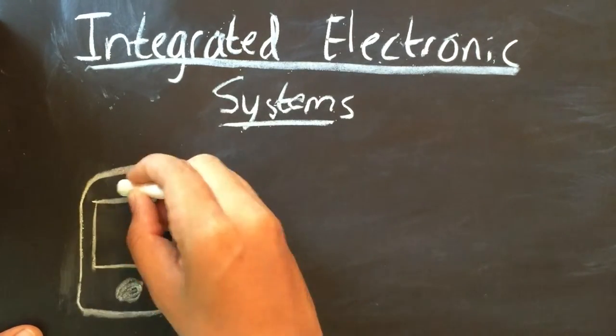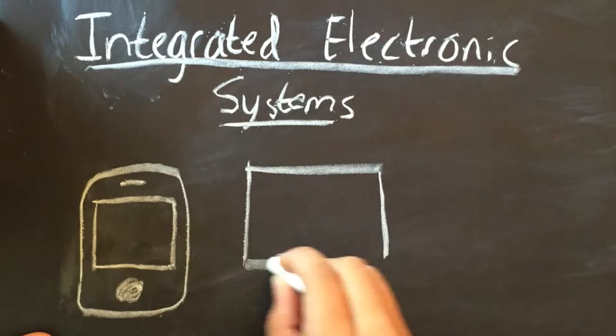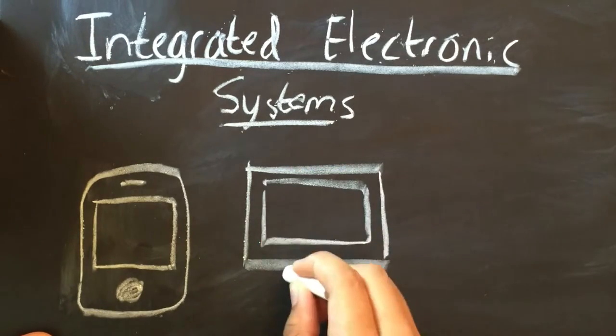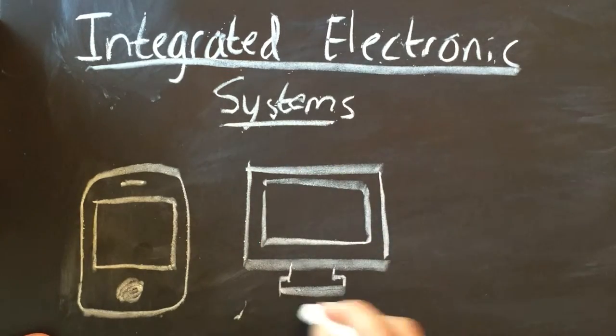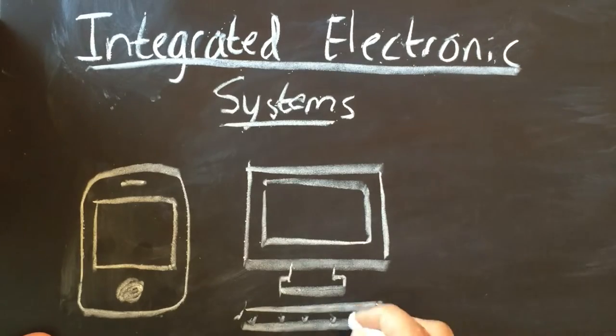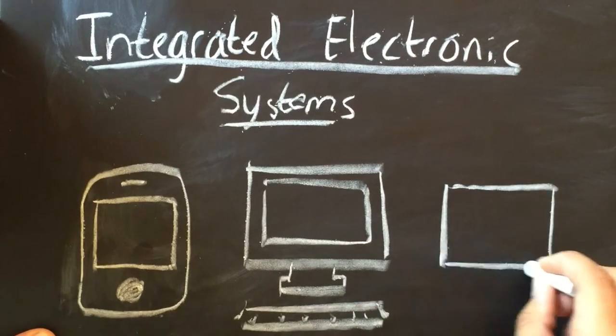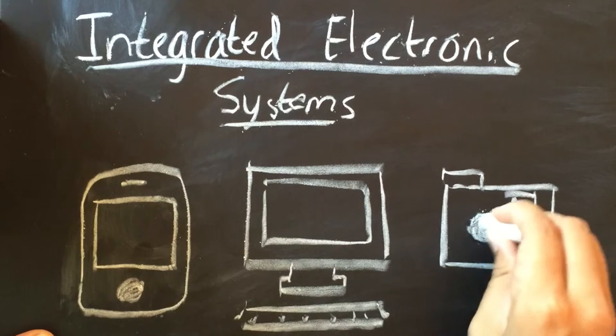So what is an integrated electronic system? Well, it's really a combination of basic electronic devices or circuits that create useful functions, and by combining multiple circuits you can expand your scope and make a numerous amount of things.